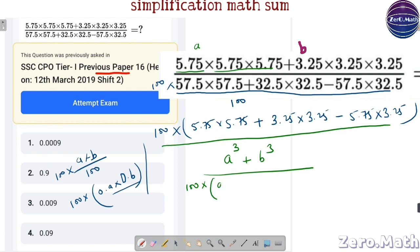Let's have a look at this denominator, simplified denominator. We can write a squared plus b squared minus ab. I hope you got it because we have assumed 5.75 as a and 3.25 as b.